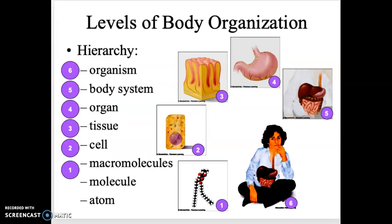Here we have different levels of the hierarchy of the organism. We start with a very tiny atom. Atoms come together to make molecules, molecules come together to make macromolecules, and macromolecules come together to make cells. Cells work together to make tissues, then we have organs, then groups of organs work together to make systems, and the systems work together to make the whole organism.